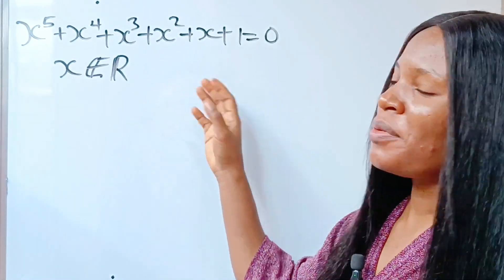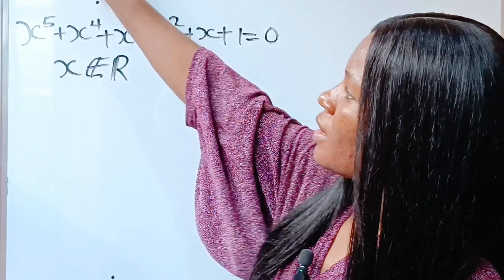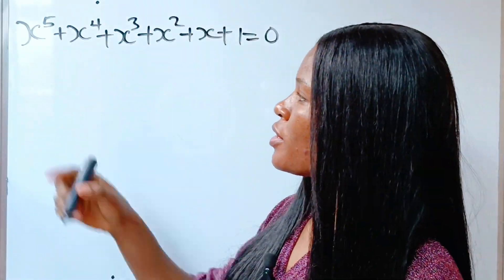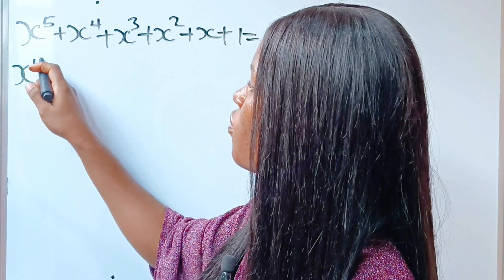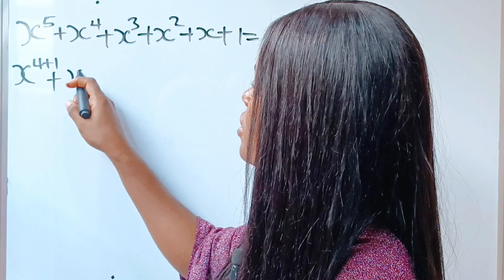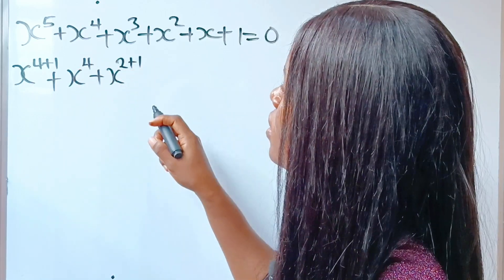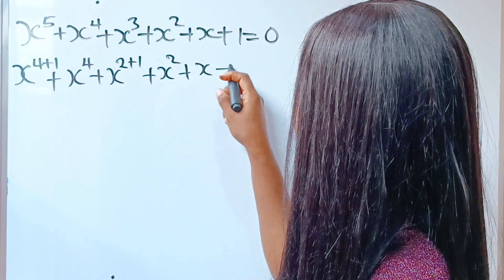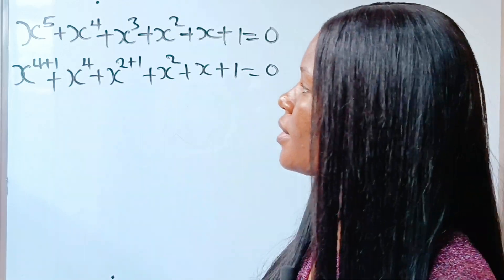Hi! Many Olympiads felt this, but let's do it together. To solve something like this, note x has to be real. So, we are going to factorize this, or we are going to write this as x to the power of 4 plus 1, plus x to the power of 4 plus x to the power of 2 plus 1, plus x squared plus x plus 1 is equal to 0.